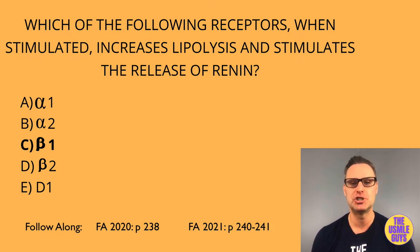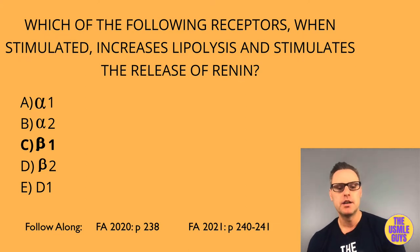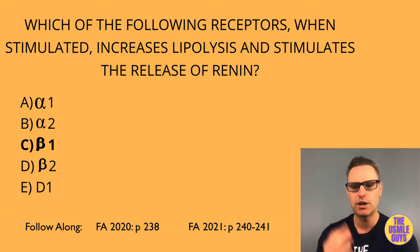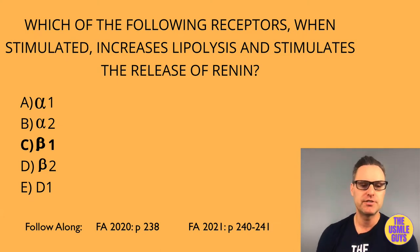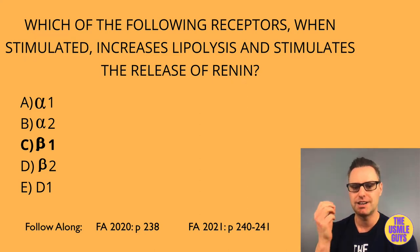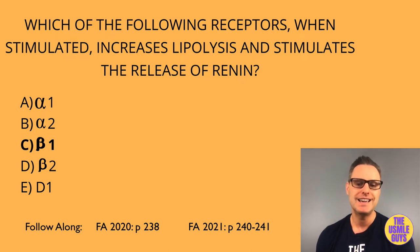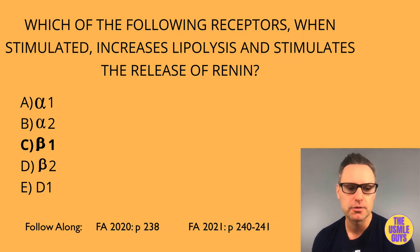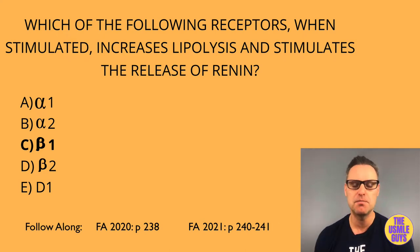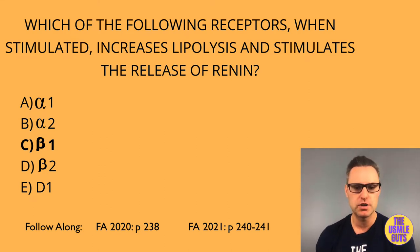Beta-1, 2, and 3 all use GS. Stimulating beta-1 results in increased heart rate, increased cardiac contractility, increased renin release, and increased lipolysis. Beta-2 stimulation causes vasodilation, bronchodilation, increased lipolysis, increased insulin release, increased glycogenolysis, decreased uterine tone, increased cellular potassium uptake, and increased aqueous humor production. Beta-3, also mediated by GS, causes increased lipolysis, bladder relaxation, and increased thermogenesis in skeletal muscle.